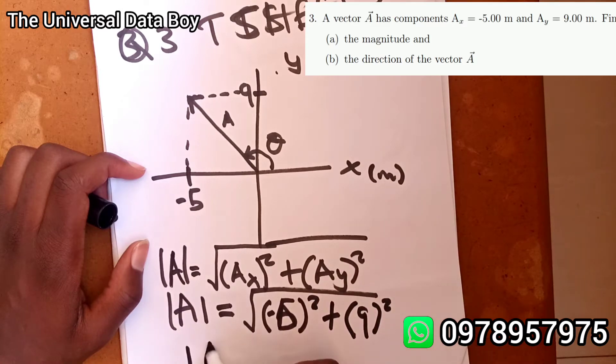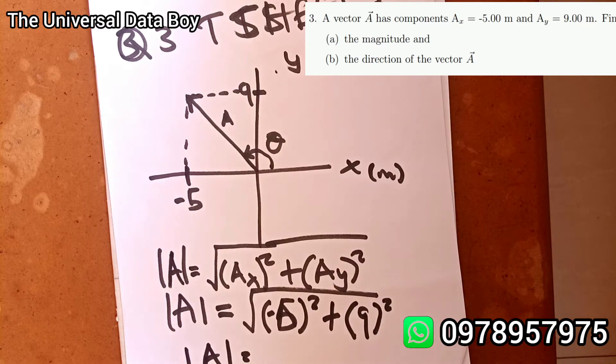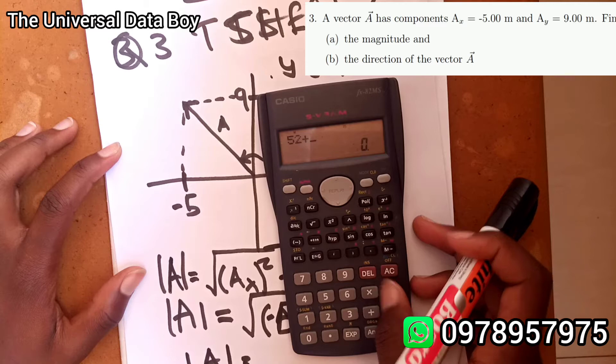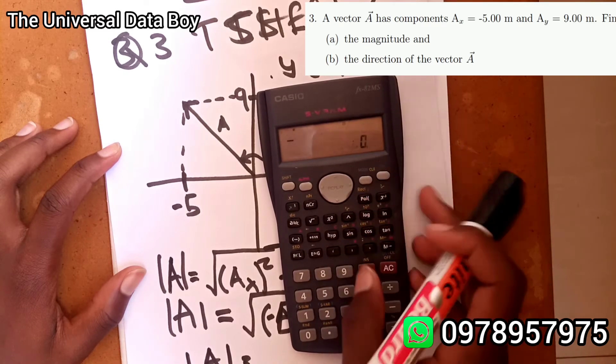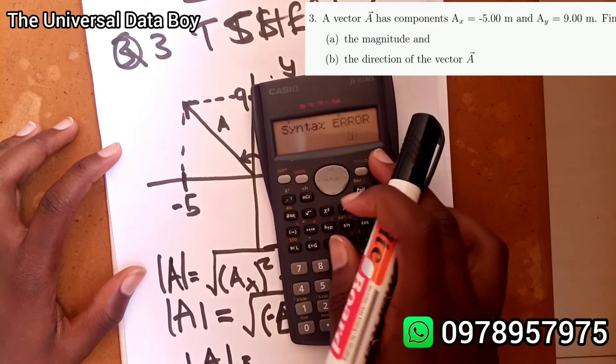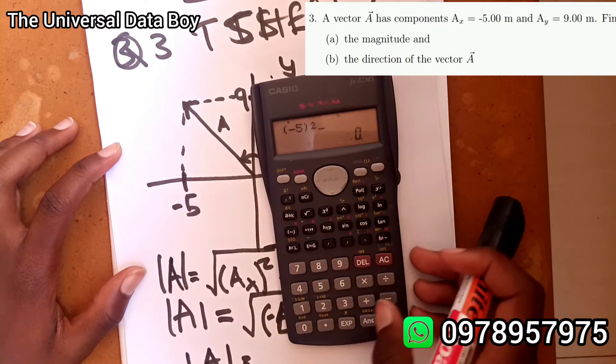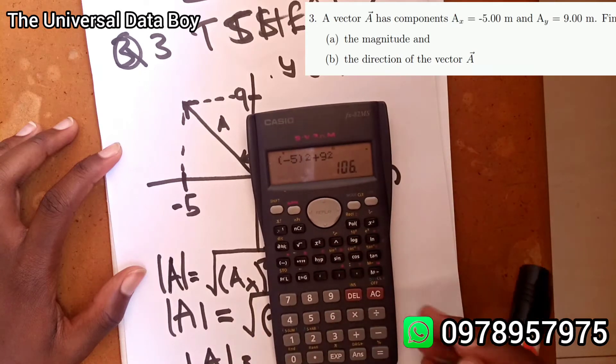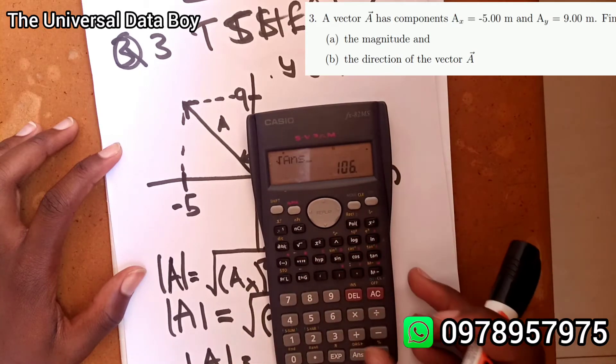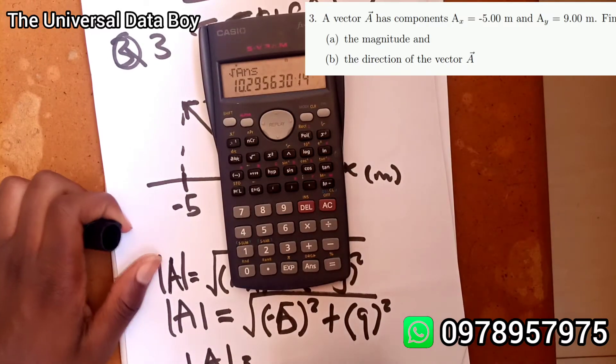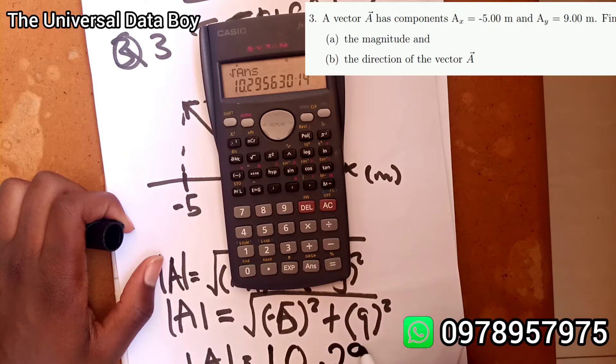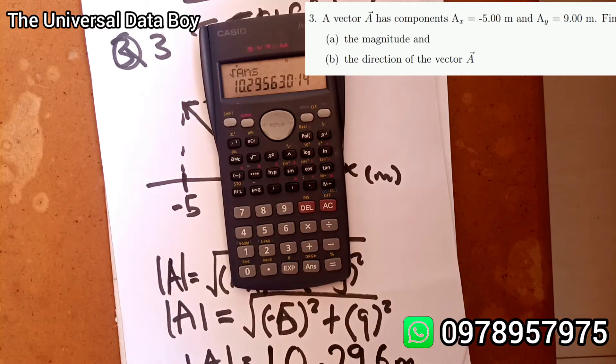So the magnitude of A is going to give us, you can punch that in calculator, so 5 squared plus -5 squared plus 9 squared and that's 106. The square root of 106 is 10.296 meters. So that's the magnitude of A.